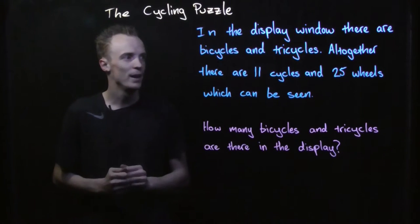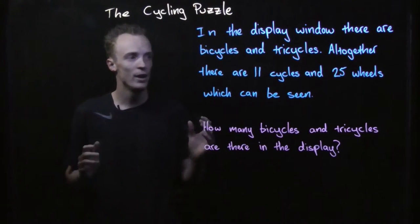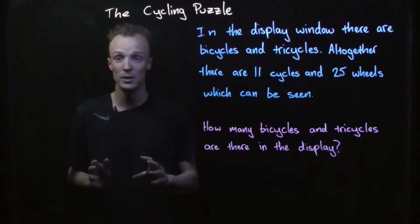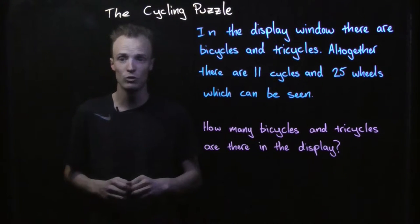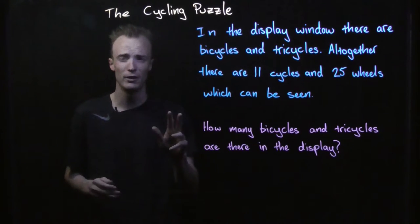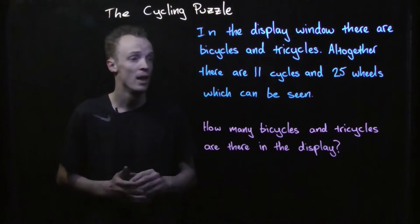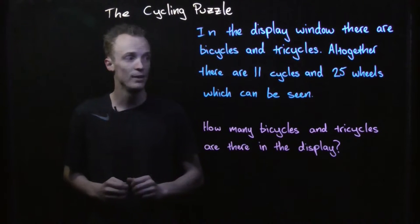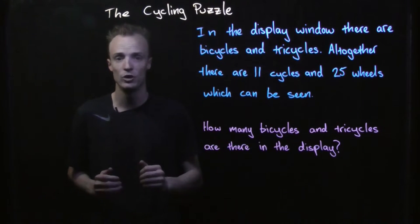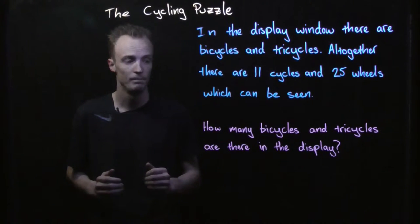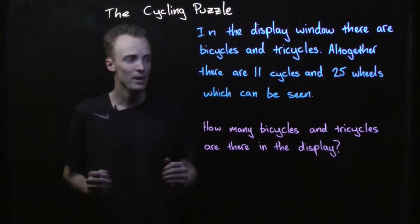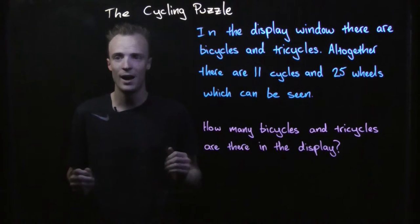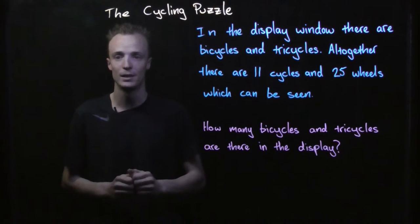Well in the display window there are bicycles and tricycles. Bicycles have two wheels, tricycles have three wheels. Altogether there are 11 cycles and 25 wheels which can be seen. How many bicycles and tricycles are there in the display?